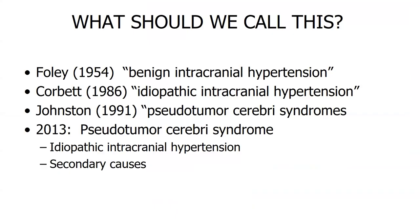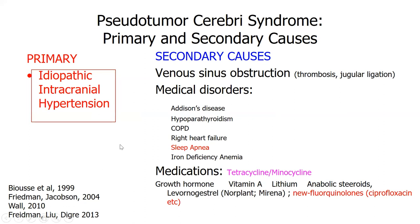The first challenge is what to call this condition. You'll see it listed as idiopathic intracranial hypertension or pseudotumor cerebri. It started out as 'benign intracranial hypertension,' but it's not benign, so that name was dropped. Then 'idiopathic intracranial hypertension' came into use, covering the primary form. 'Pseudotumor cerebri' — meaning false tumor — was used because imaging shows no actual brain tumor. The primary form is what we call IIH.